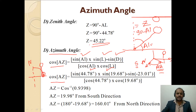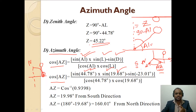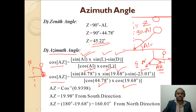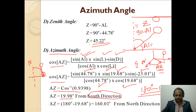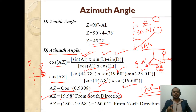Replacing the values — altitude = 44.78°, latitude = 19.68°, declination = −23.01° — into the azimuth formula and taking the inverse cosine gives an azimuth angle of 19.98° from the true south direction. If you want the measurement from true north, simply subtract this value from 180°. In this calculation we use the true south reference, so the azimuth is 19.98°.